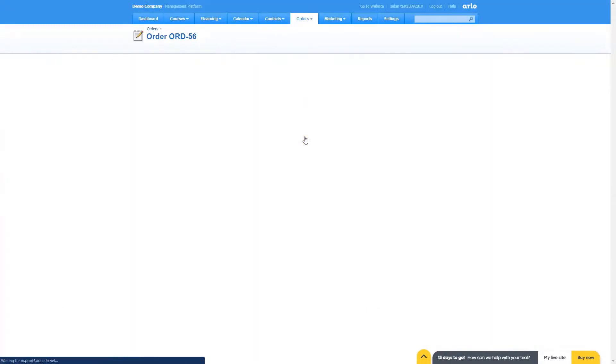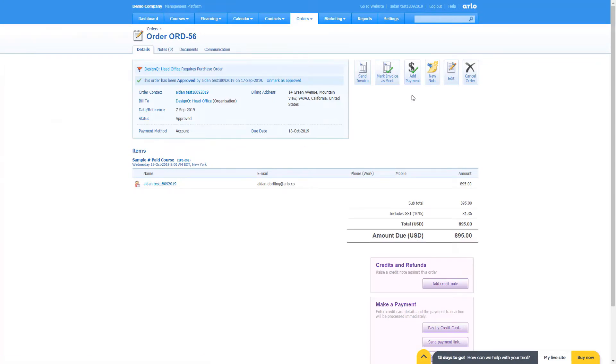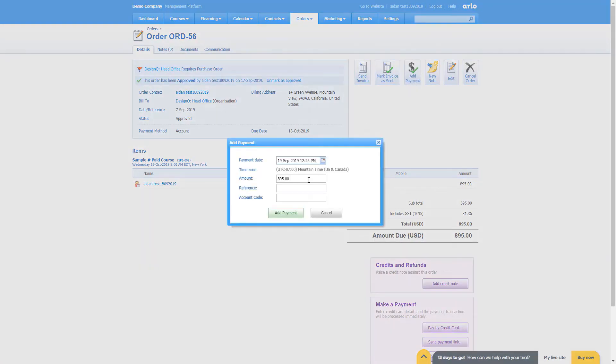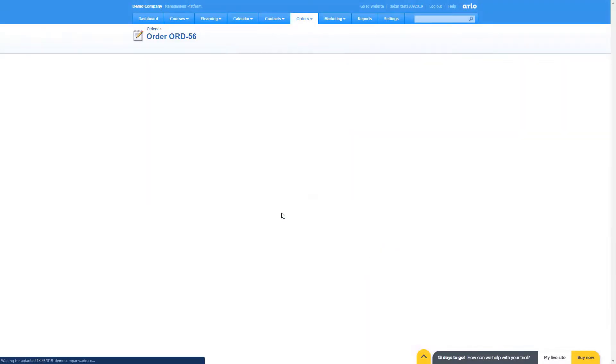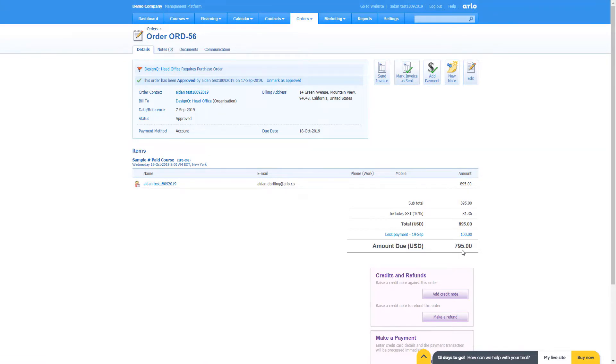Partial payments gives you greater flexibility around taking payments. It'll allow you to do things like take multiple credit card payments on a single order, use credit notes to adjust amounts on orders, and manage the financial implications of someone transferring people between courses that have different prices.